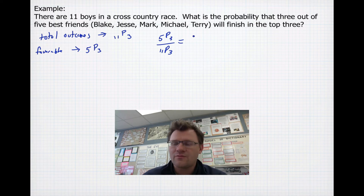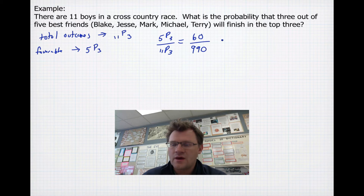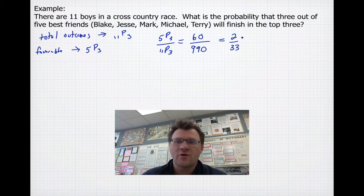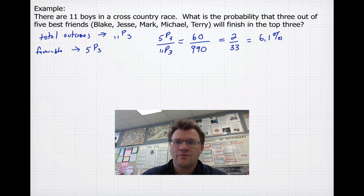So the probability is 5P3 over 11P3. 5P3 equals 60, and 11P3 equals 990. That simplifies to 2 over 33, or about 6.1%.